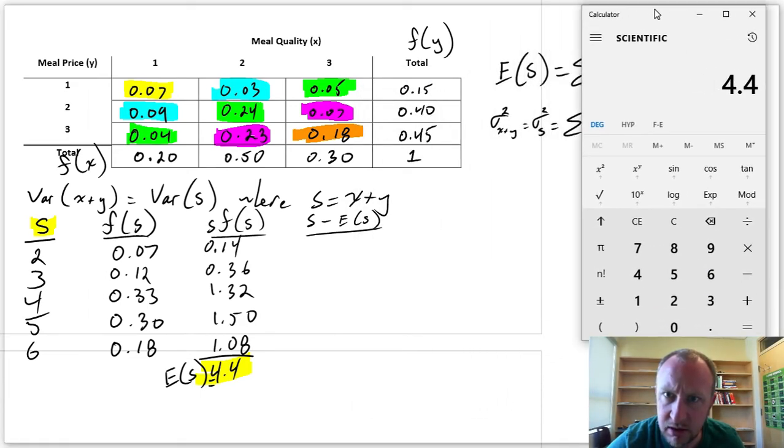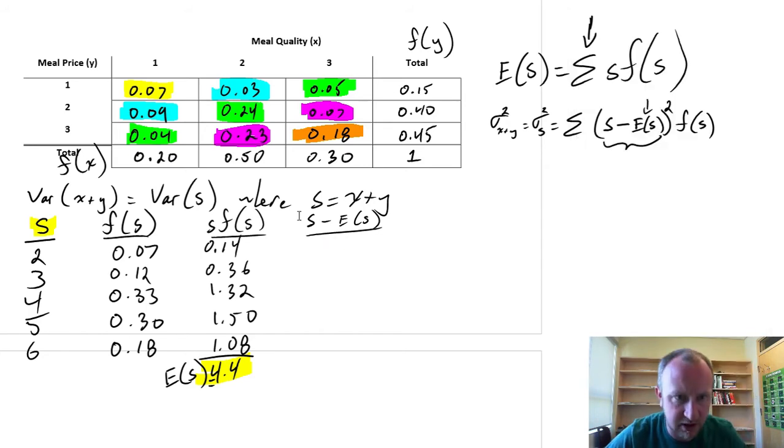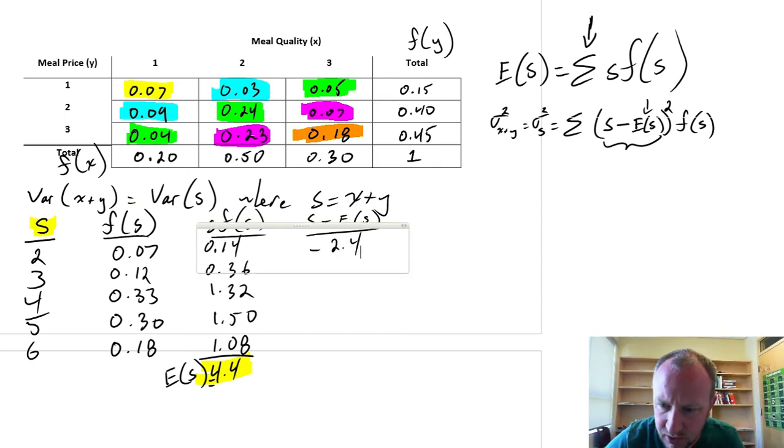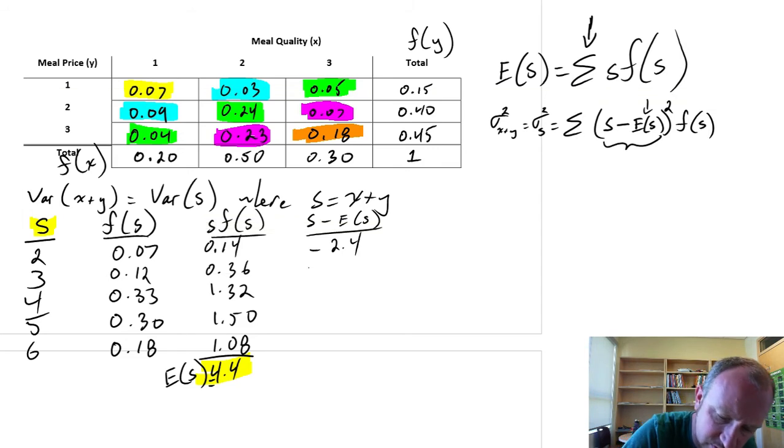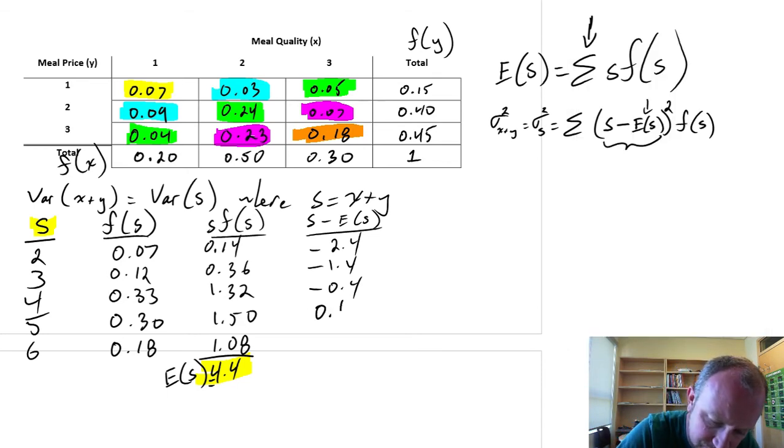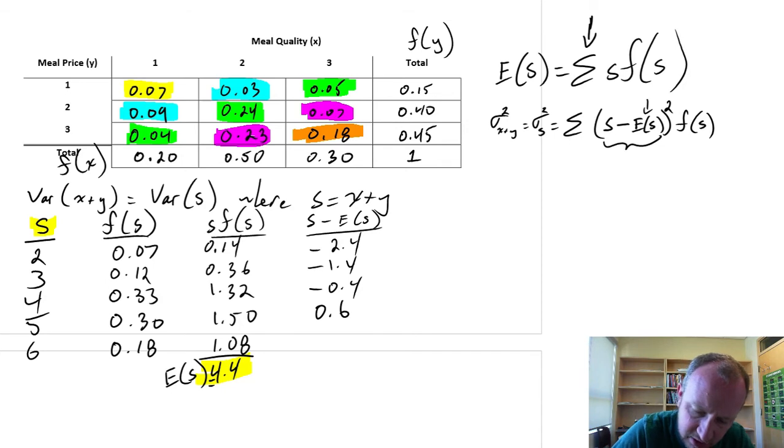So now we'll just go through these differences, s minus the expected value of s. So that's going to be this column minus this expected value. So our first calculation is 2 minus 4.4, so minus 2.4. Our next one, 3 minus 4.4 minus 1.4. This one is minus 0.4. The next one, we're down to 5 minus 4.4, 0.6. And 6, our last value, minus 4.4, 1.6. So now we have those differences.